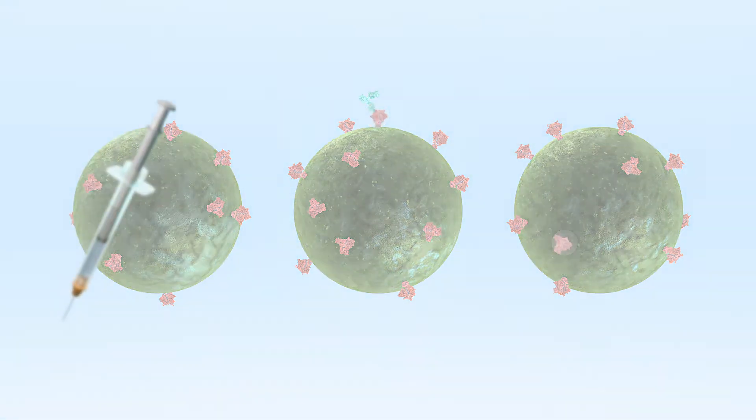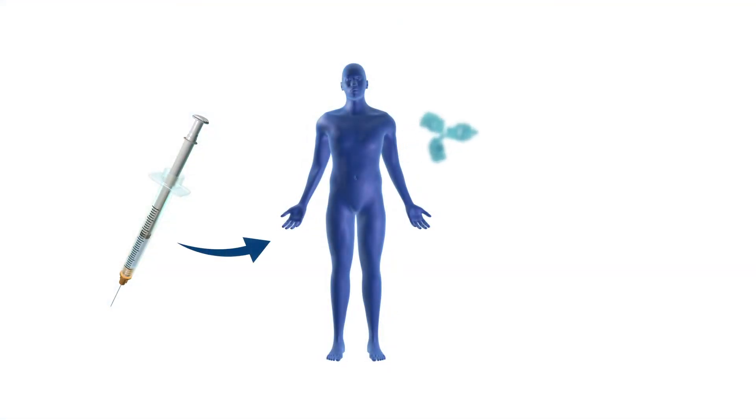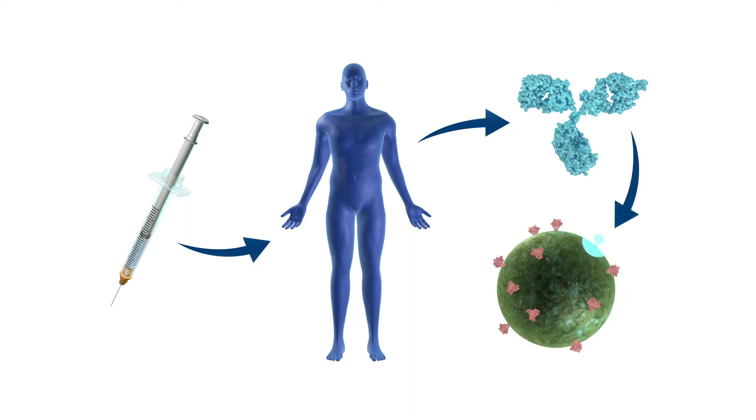For an HIV vaccine to be effective, it must trigger production of BNABs that home in on the preserved region of the virus's envelope to neutralize it from infecting the body.